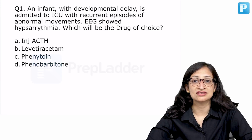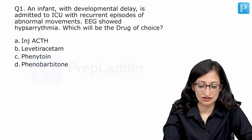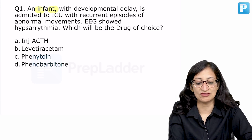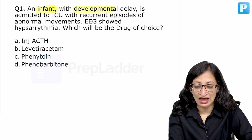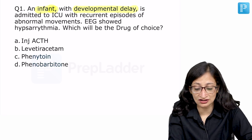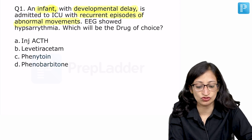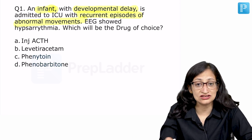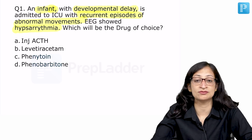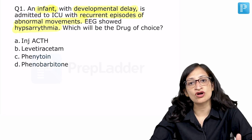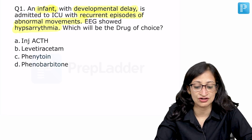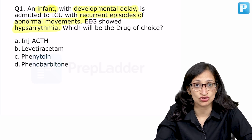What we have here is an infant who presented with developmental delay, admitted to ICU with recurrent episodes of abnormal movements, and the EEG of this patient showed hypsarrhythmia. What will be the drug of choice? For answering this question you need to know the diagnosis first, only then you can comment about the drug of choice.